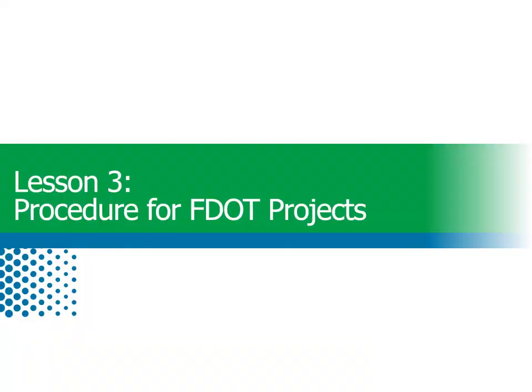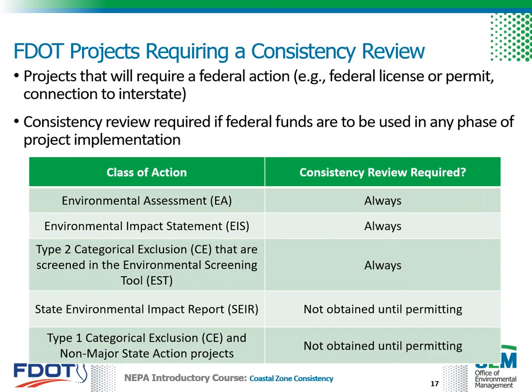Now that we have discussed how FDOT both reviews other Florida Coastal Management Program agency projects and submits federal projects for review by other participating agencies, we can discuss how FDOT ensures federal consistency for its projects requiring review. FDOT projects that will require a federal action such as a federal license or permit or a connection to the interstate will require a federal consistency review. A consistency review is also required if federal funds are needed for any phase of project implementation. Environmental assessments, or EAs, Environmental Impact Statements, or EISs, and Type II categorical exclusions that are screened in the Environmental Screening Tool, called the EST, always require a federal consistency review.